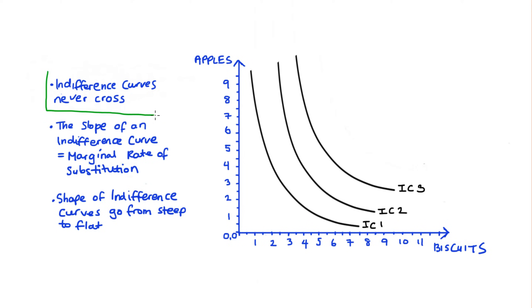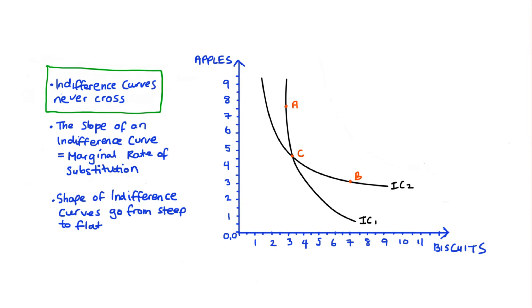So let's start with the first feature. To see why indifference curves cannot cross, let's consider the case if they did cross like this. And I have three bundles A, B and C marked. Now because A is on the same indifference curve as C, they're both on IC1, right? Then we know that we're indifferent between A and C. And we can represent this indifference just with this tilde here. So A tilde C.